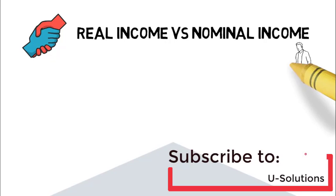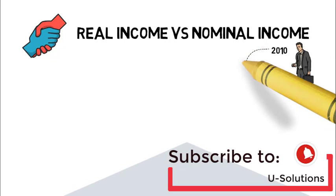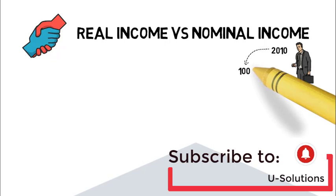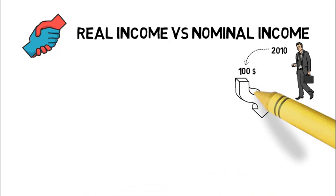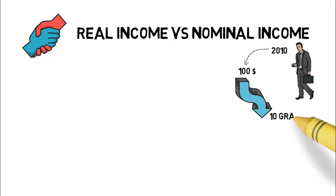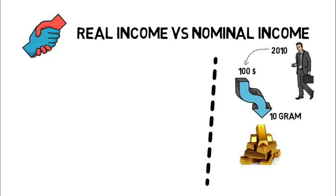This is Mr. Zhu, and we said that in 2010 his monthly income was $100. And with this $100, he was able to buy 10 grams of gold.